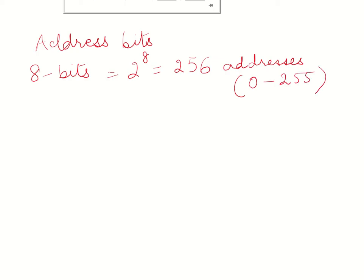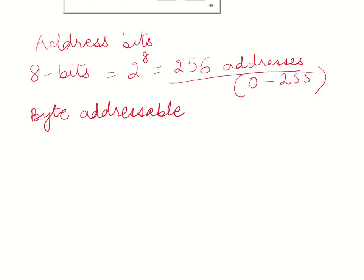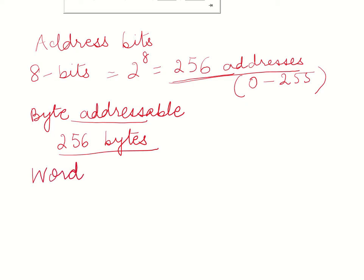So what is the maximum memory size that the system can have if it is byte addressable? If the memory is byte addressable and only 256 addresses are possible, that means I can have 256 bytes only, because in a byte addressable memory each byte needs an address. Only 256 addresses are possible, so the size of the memory can only be 256 bytes.